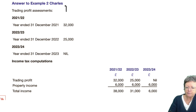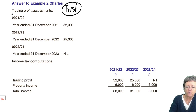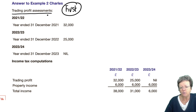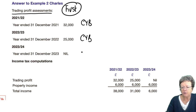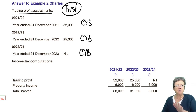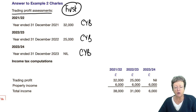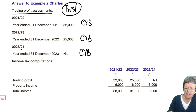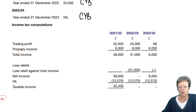The first thing you do is work out what tax year the accounts are going to be assessed in. We're on a current year basis in each of these years, but it's important that you write that out so you know clearly what year everything fits into. So the December 2021 accounts — the profit of 32,000 — fits into 2021-22, and so on and so forth. Then you set up your pro forma with years across the top.